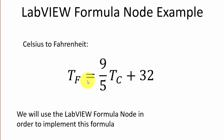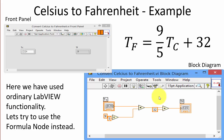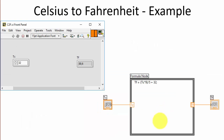In this video I will go through a simple example. Let's assume we want to convert a temperature value in Celsius to Fahrenheit using a simple formula. With ordinary LabVIEW syntax it would typically look like this: you define a control TC, then an indicator TF, and then implement the formula using the built-in multiply, divide, and addition blocks.